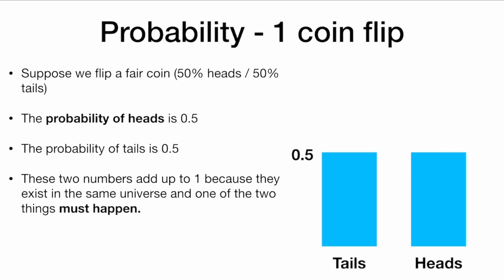For example, if I flip one coin — a fair coin that lands 50% heads and 50% tails — the probability of heads is 0.5 and the probability of tails is 0.5. These two numbers add up to one because they exist in the same universe, and one of the two things must happen. Probabilities must add up to one.